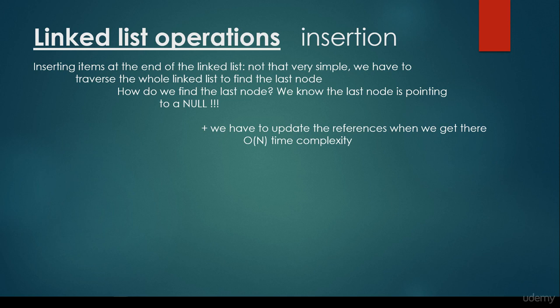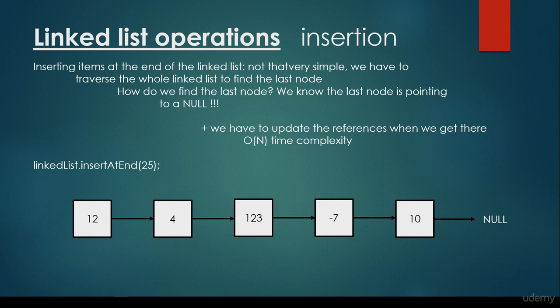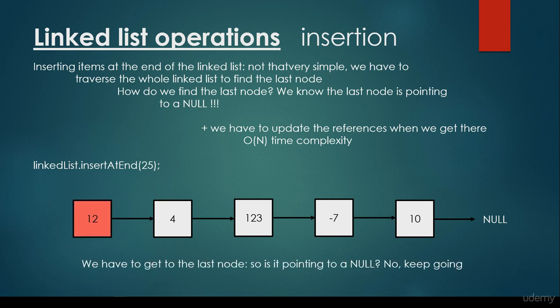So we have to consider every item in the LinkedList. What about arrays? Inserting items at the end of the array is very fast. Inserting items at the end of the LinkedList is quite slow. For example, we have this LinkedList with items 12, 4, 123, minus 7, 10. We would like to insert 25 at the end. It's very important that we can access only the root of the LinkedList — we are not able to make random access. The root node is the first node, which is 12 in this case.